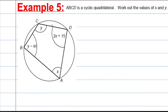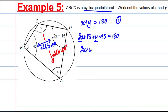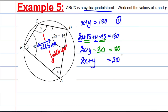Last example. Example 5 — probably the hardest. ABCD is a cyclic quadrilateral. Work out the values of X and Y. In a cyclic quadrilateral, opposite angles add to 180. So X plus Y equals 180 — equation 1. The other pair of opposite angles: 2X plus 15 plus Y subtract 45 equals 180. Tidying up: 2X plus Y plus 15 subtract 45 gives negative 30, so 2X plus Y equals 210 — equation 2.